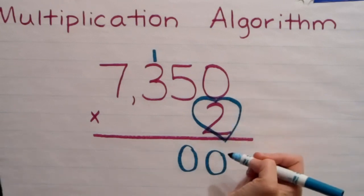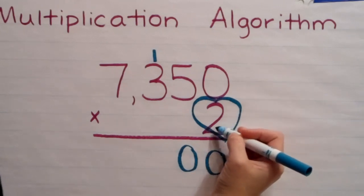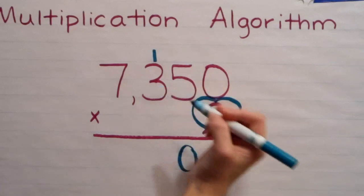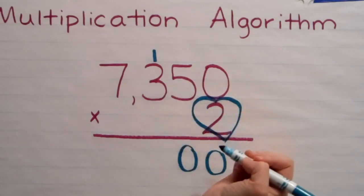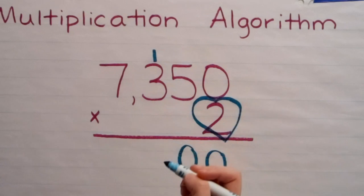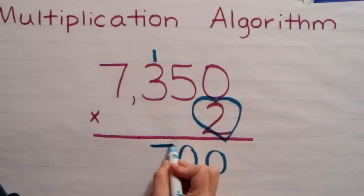Now I go back to my heart again. Two, and I multiply it by the digit in the hundreds place, three. Two times three is six. Add one more, which is seven. And I'll bring that down to the hundreds place.